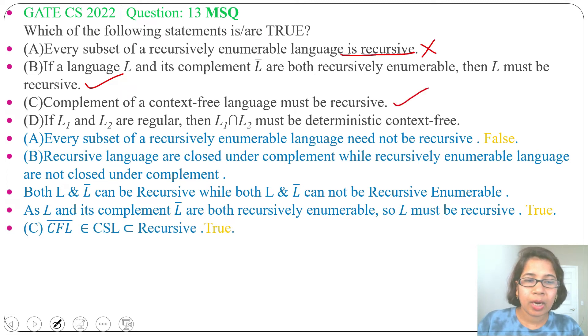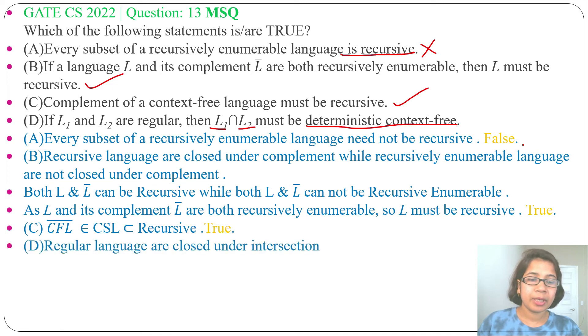Next, option D: if L₁ and L₂ are regular, then L₁ ∩ L₂ must be deterministic context-free. Regular languages are closed under intersection, so if L₁ is regular and L₂ is regular, their intersection should be regular. Regular languages are a subset of deterministic context-free languages, so L₁ ∩ L₂ must be deterministic context-free. This is true. We found options B, C, and D are true while option A is false, and this is a MSQ.